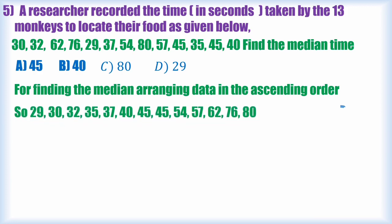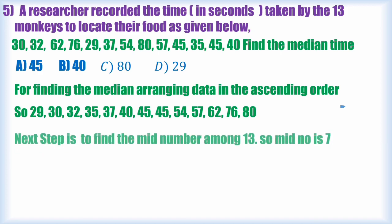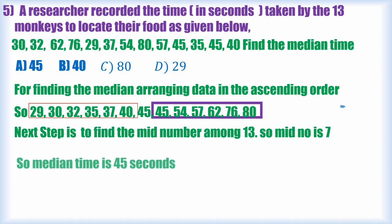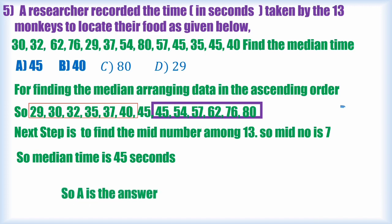Arranging the data in ascending order: 29, 30, 32, 35, 37, 40, 45, 45, 54, 57, 62, 76, 80. For 13 values, the median is the 7th number. The 7th value is 45, so the median time is 45 seconds. Option A is the answer.